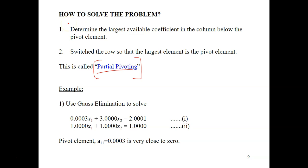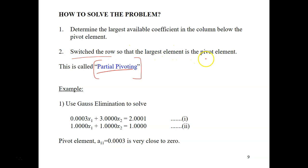How do we do partial pivoting? There are two steps. First, we determine the largest available coefficient in a column below the pivot element. Then the key step: switch the row so that the largest element becomes the pivot element.